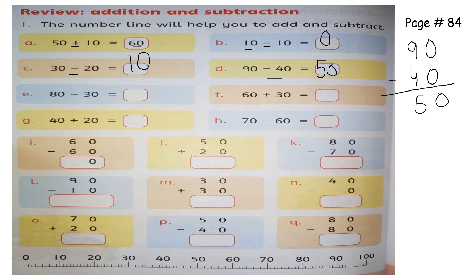Now I am going to do i, j, and k part. Six minus six is zero. What is this symbol? Plus — so we have to add: five plus two is seven. Zero, because we are subtracting here — eight minus seven is one. Now you have to do the remaining parts by yourself.